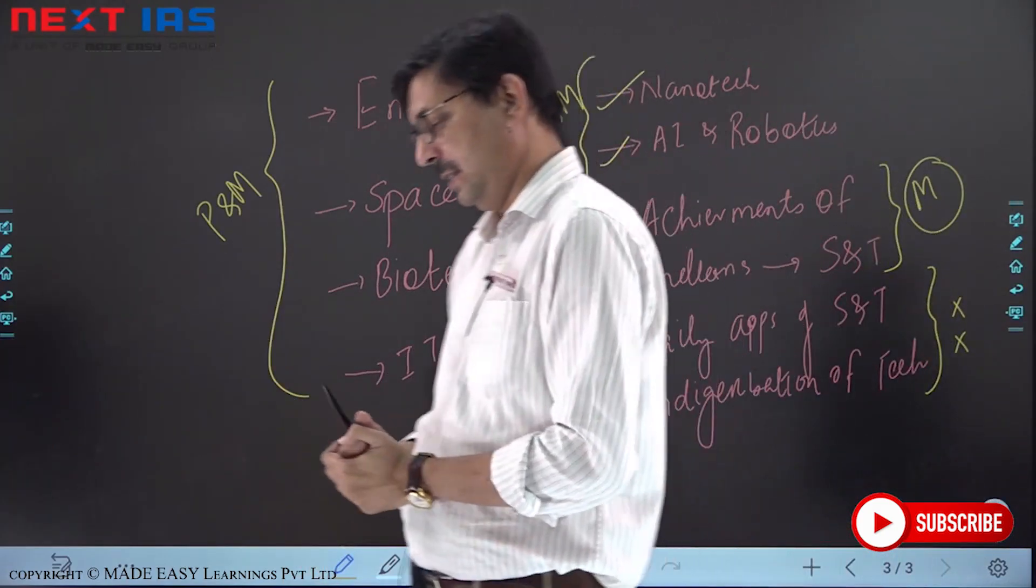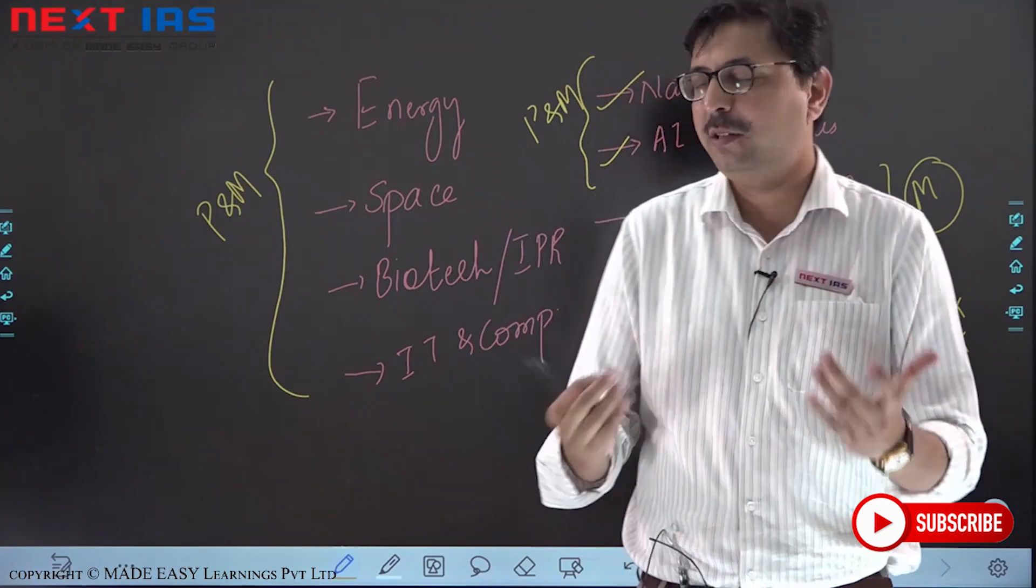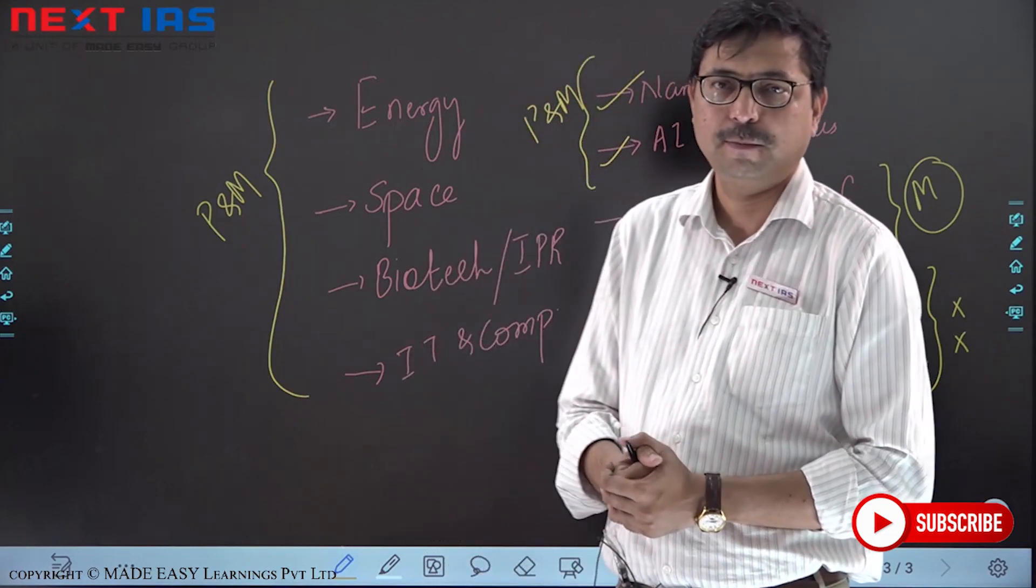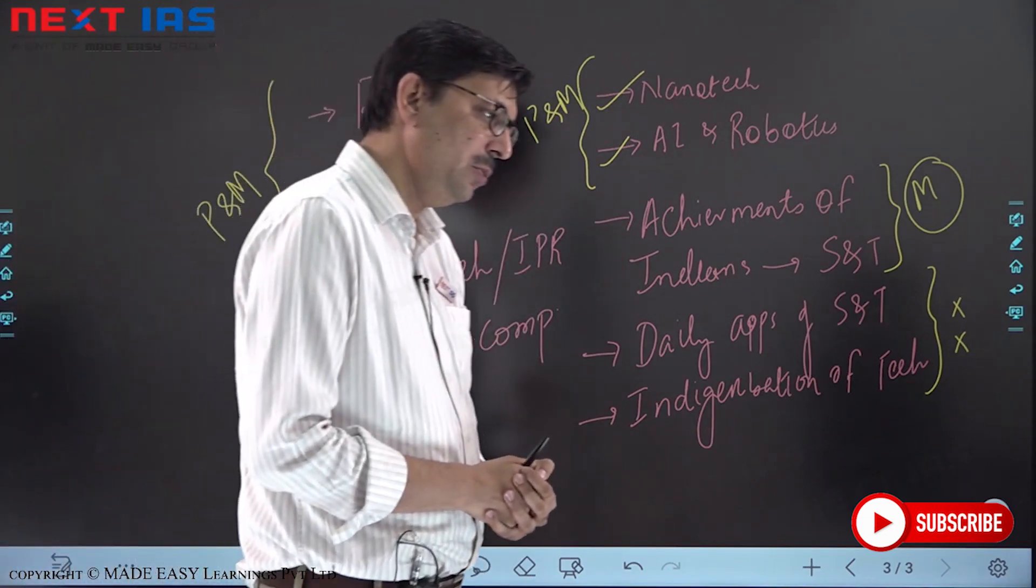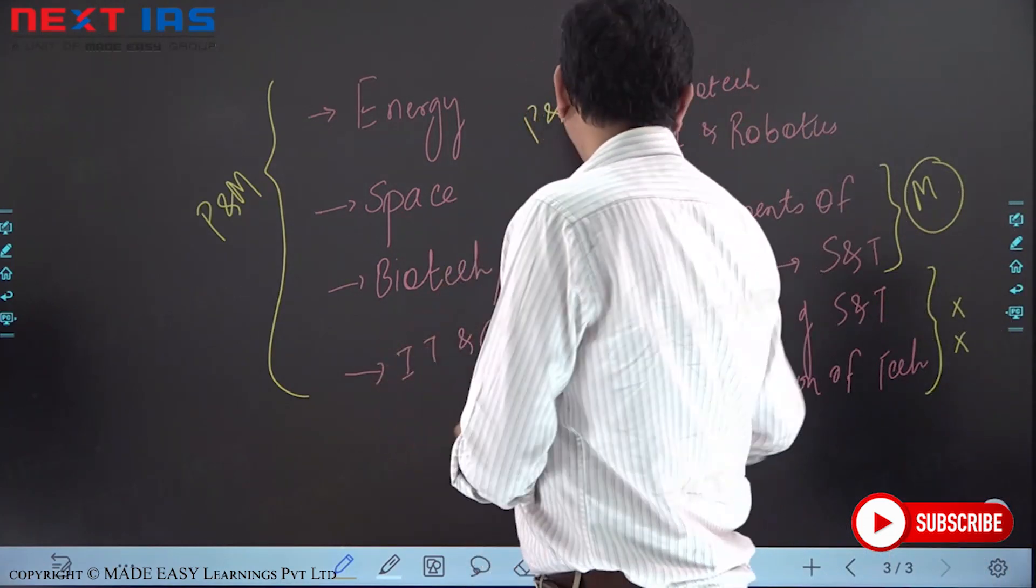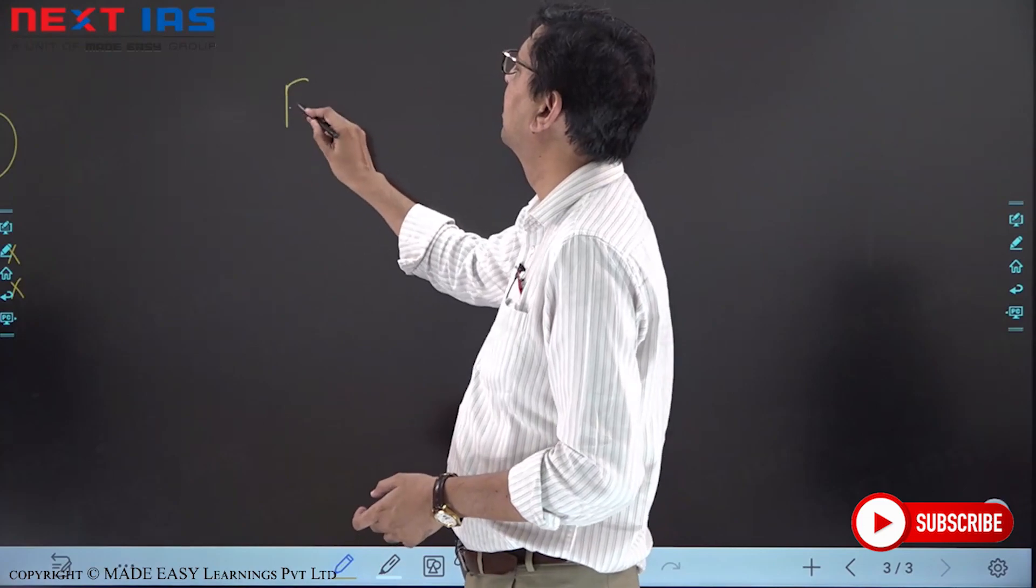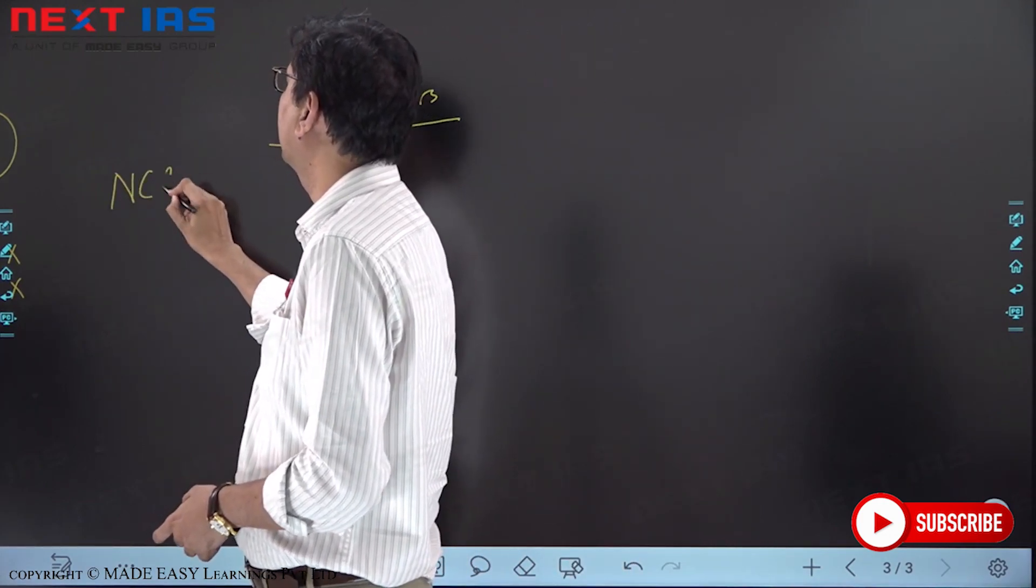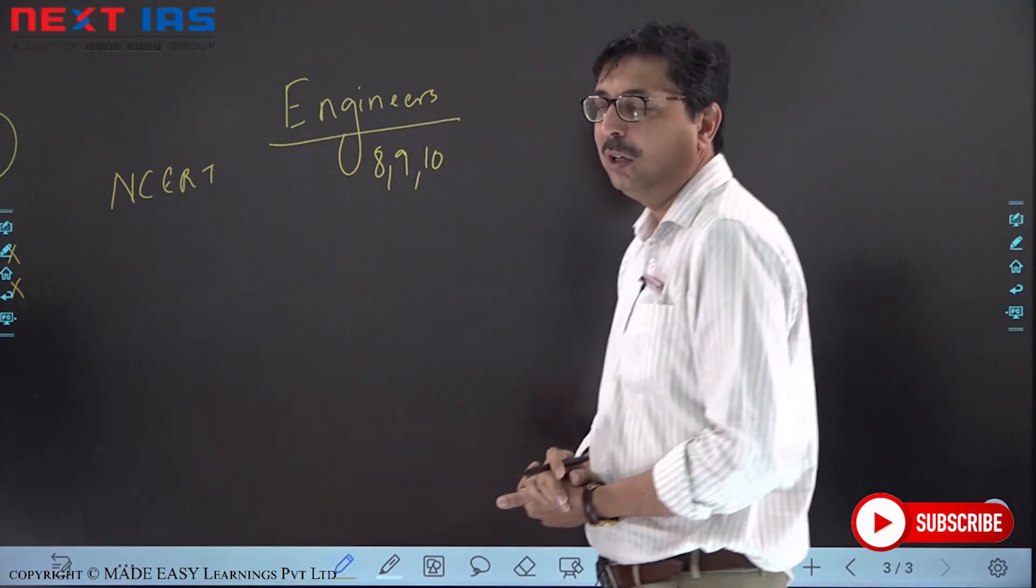Now another very important aspect is, so from where should I prepare. See here if you are a fresher, you have started your preparation, then you start with NCERTs. If you are an engineer, B.Tech, any discipline, then you need to go through eighth, ninth, tenth NCERTs. So first let's see NCERT what to do. Eighth, nine, ten, only what? Life science portion.